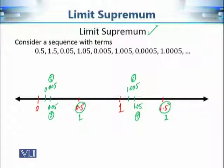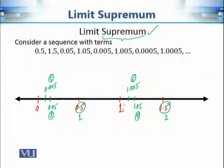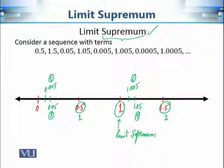Roughly speaking, the sequence is not converging to one point — in fact, it is converging to two points. One point is the origin, 0, and the second point is 1. Since we are talking about the supremum, which number is bigger, 0 or 1? It is going to be 1. So intuitively, we can say that 1 is going to be equal to the limit supremum of the given sequence.